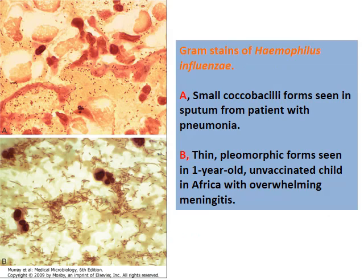A typical gram stain can be seen at the top. You can also see scenarios especially in Africa, where childhood vaccination is unavailable, with large amounts of this bacteria growing in the CSF of babies and children, causing overwhelming meningitis.